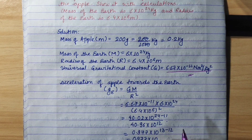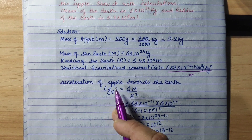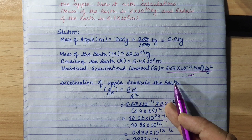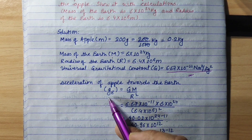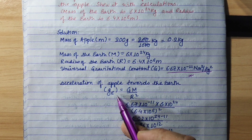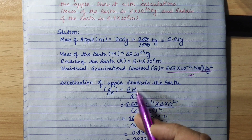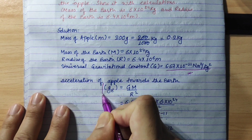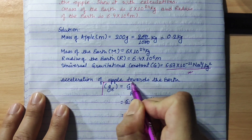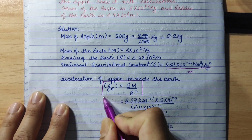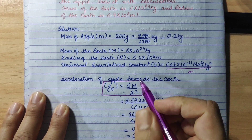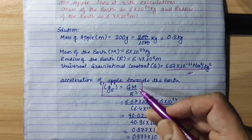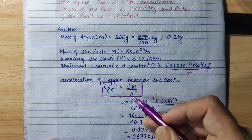Now, the first part is the acceleration of the apple towards the Earth. The acceleration of the apple towards the Earth is the acceleration due to gravity of the Earth. The small g formula is: g = GM/R², where G is the gravitational constant, capital M is the mass of the Earth, and R is the radius of the Earth.